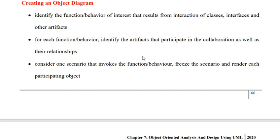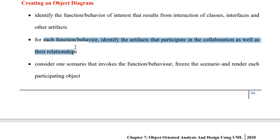Now let us try to understand the various steps involved in creation of an object diagram. The first step is to identify all the functionalities that may be of interest — those that result from interaction of classes and interfaces. So we need to identify all the functions or behaviors that may be of interest, which may be produced as a result of class interactions. Once the set of functions are identified, for each identified function or behavior, we need to identify the set of collaborating objects and the relationship between them.